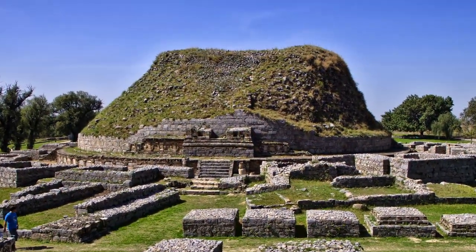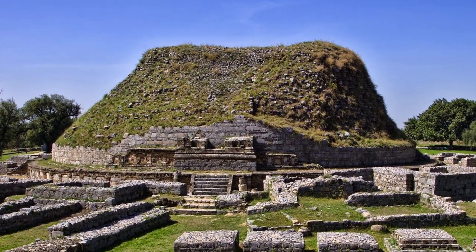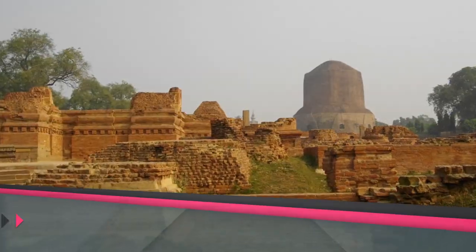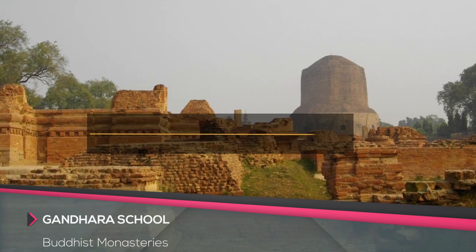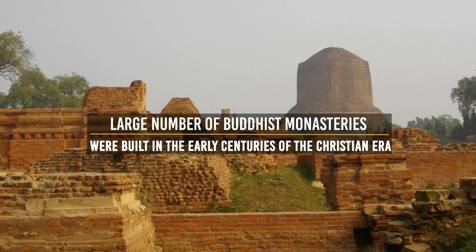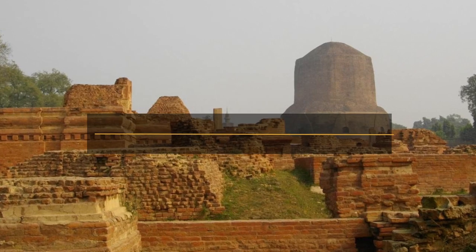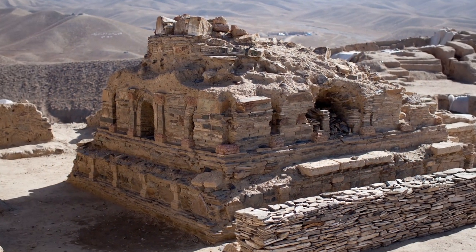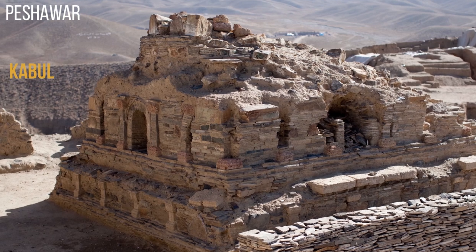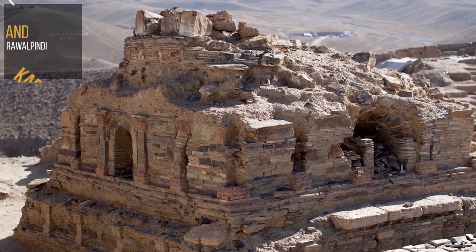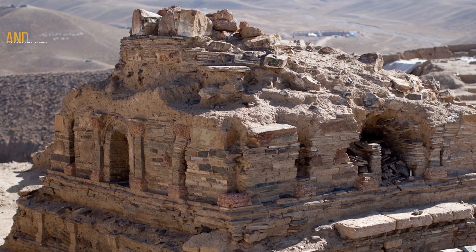There is also the representation of thick drapery with large and bold fold lines, rich carving, elaborate ornamentation and complex symbolism. Gandhara architecture excelled mainly in the construction of monasteries and stupas. A very large number of Buddhist monasteries were built in the early centuries of the Christian era. Ruins of about 15 monasteries have been found in the neighbourhood of Peshawar and Rawalpindi, while in the Kabul valley alone there are some 50 examples.